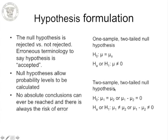For a one-sample two-tailed null hypothesis, we write that the mean equals mu-naught, some stated mean. The two-sample two-tailed null hypothesis is written as mean one equals mean two, or the difference between mean one and mean two equals zero. These are paired with alternative hypotheses — essentially what we are trying to prove.